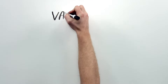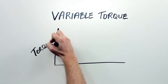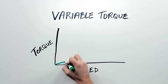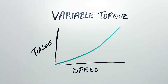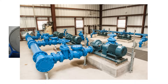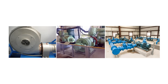Our fan example is what's called a variable torque load. As the fan speeds up, the amount of torque or force required to move the air increases. Other types of variable torque loads besides fans are blowers, spinning pumps, and spinning compressors. The general rule of thumb is that if the load being moved is air or a relatively easy to move liquid, like clean water, then it's likely a variable torque load.